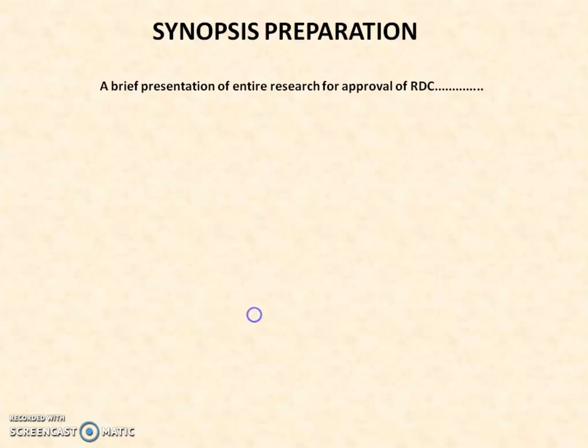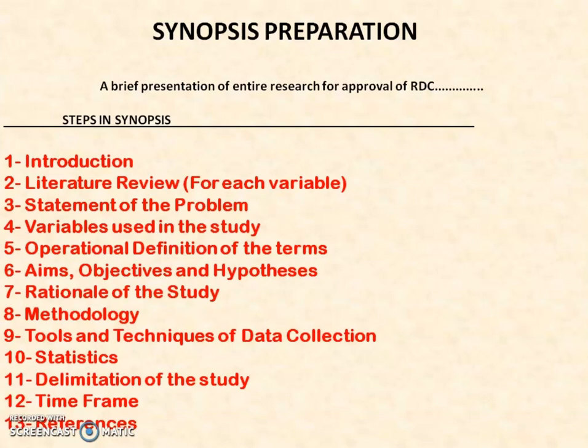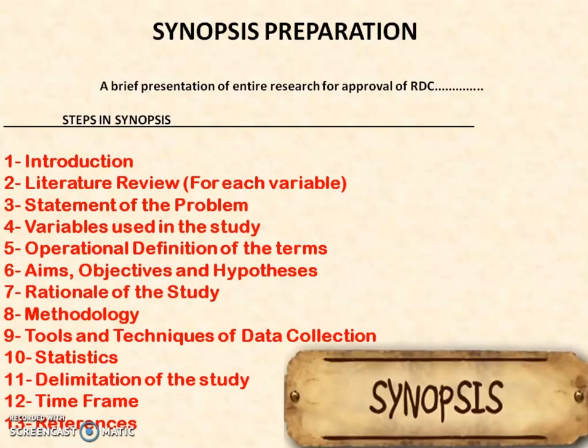These are the steps in your synopsis. The first step is introduction. Second is literature review — that is for each and every individual variable. Third is the statement of problem, which is the title of your study. Fourth is the variables used in the study — they must be very clear, precise, and approachable. Fifth is the operational definition of the terms; the terms you are using in your study should be operationally defined.